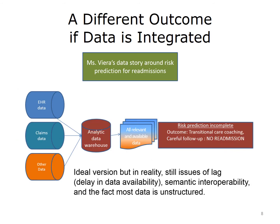It is possible, however, to integrate data from these sources, or at least exchange it, as in health information exchange programs. To truly analyze risk, the data can be integrated into an analytic data warehouse, where all relevant and available data can be processed. Then, a more accurate and complete risk score can be calculated, and programs like transitional care coaching or the care transitions intervention can be targeted to our needs. These programs can reduce readmission risk by working with patients more closely before and upon discharge.